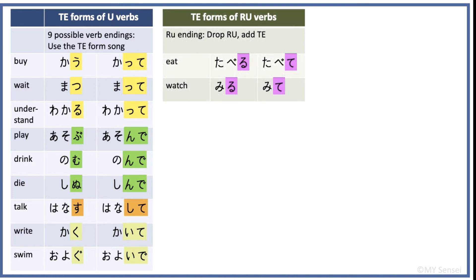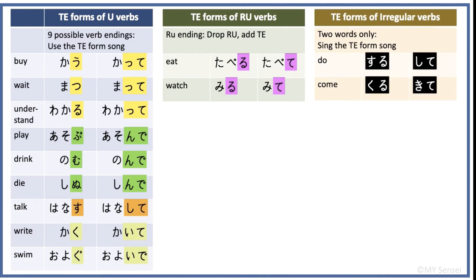As for ru-verbs, just drop ru and add te to get the te form. For suru — to do — its te form is shite, and for kuru, its te form is kite. Please review these te forms so that you can use them correctly with the mata + verb-te + imasen sentence pattern to describe something that has not been done yet.